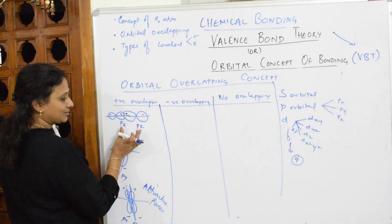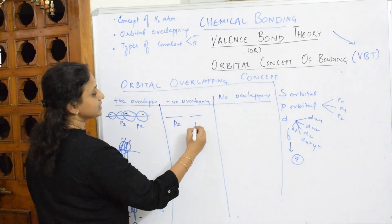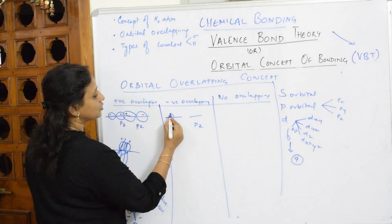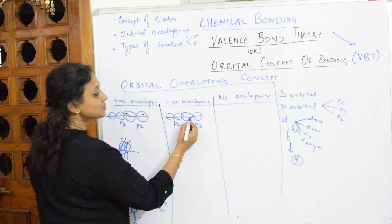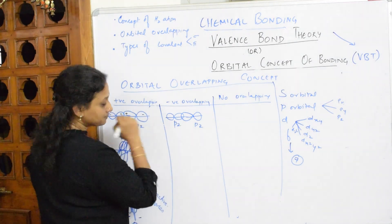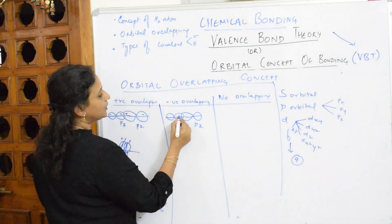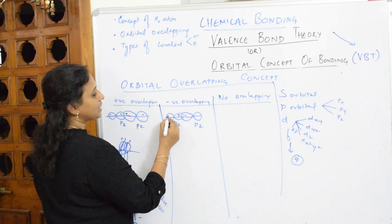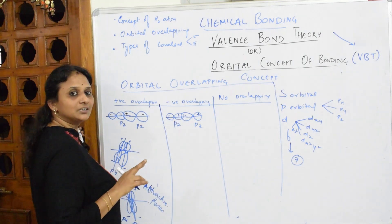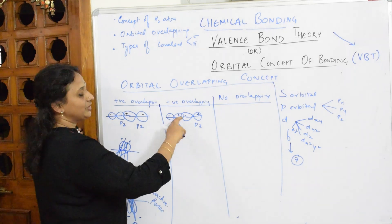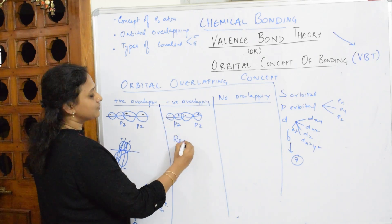Now I'll go with negative overlapping. I'll pick up Pz and Pz again. In negative overlapping, what I have is one positive lobe overlapping with one negative lobe. This is positive, this is negative — and again, this is positive, this is negative. Two different nodes: it has become a node and anti-node situation. So here, your repulsive forces start acting.